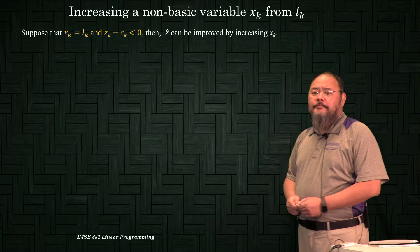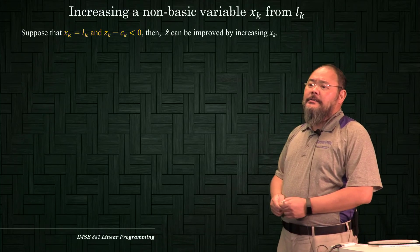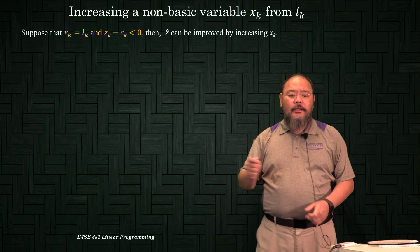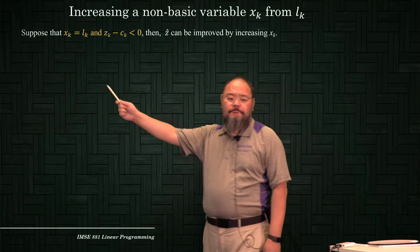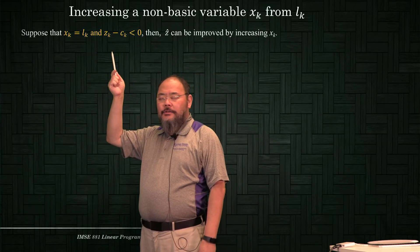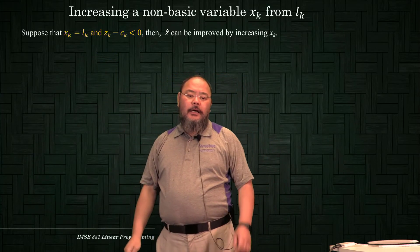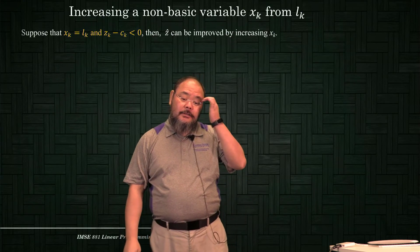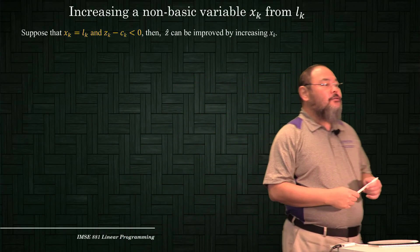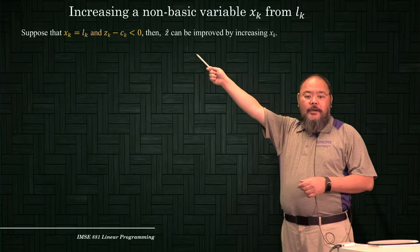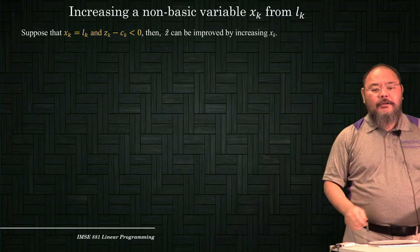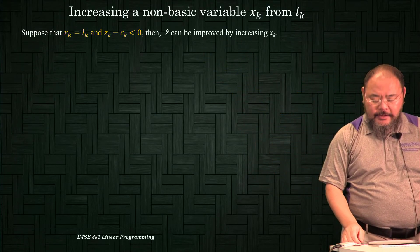Next we're going to talk about the case where the non-basic variable we choose to enter is currently at the lower bound, and the corresponding zk minus ck is less than zero. Then the objective function value z-hat can be improved by increasing the value of xk.